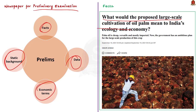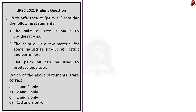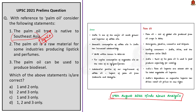Sometimes UPSC straight away picks up facts from the newspaper. For example, a newspaper article titled 'What would the proposed large-scale cultivation of oil palm mean to India's ecology and economy?' was published in The Hindu on September 18, 2021. UPSC picked up a straight fact from this article and asked a question about it in the 2021 prelims. Oil palm is actually native to Africa, not Southeast Asia as many might assume.